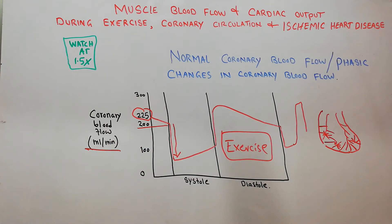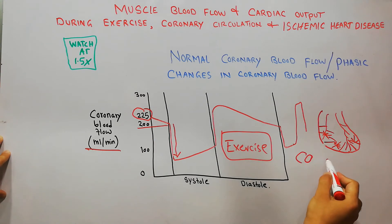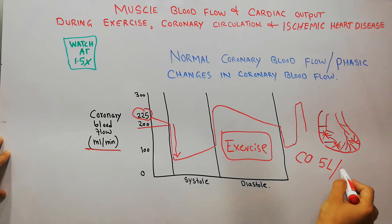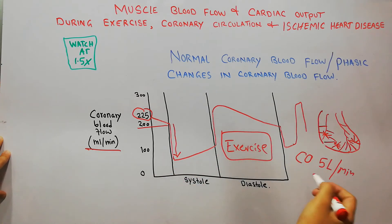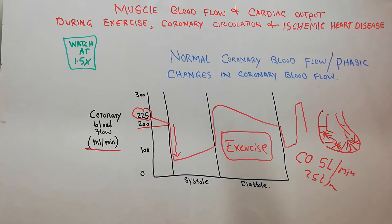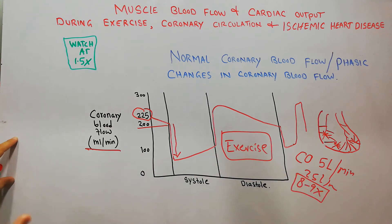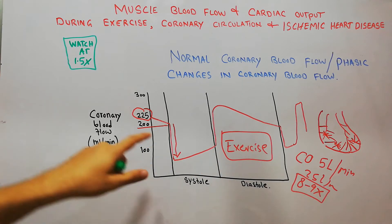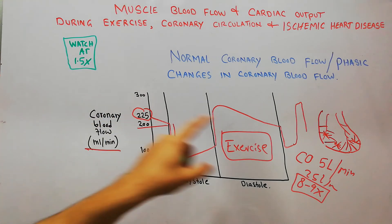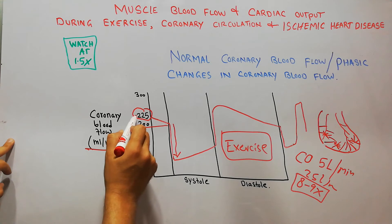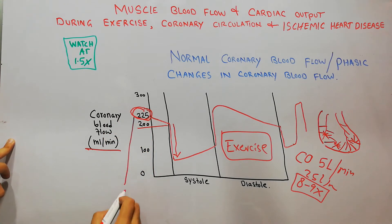Now, if a person starts exercising, the cardiac output — which normally is around 5 liters per minute — may increase to around 25 liters per minute. The work output or load on the heart may increase around eight to nine times. To compensate for this, the blood flow to the heart muscles may increase four to five times.